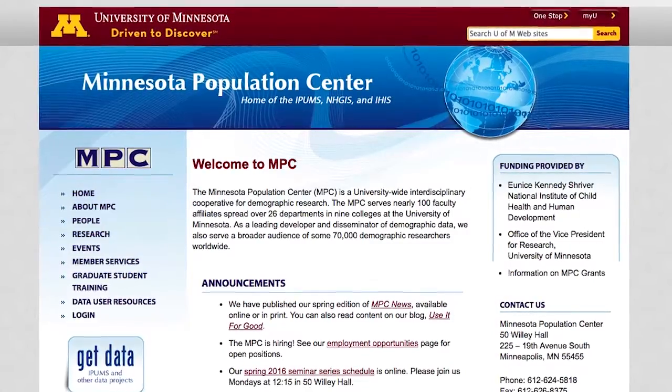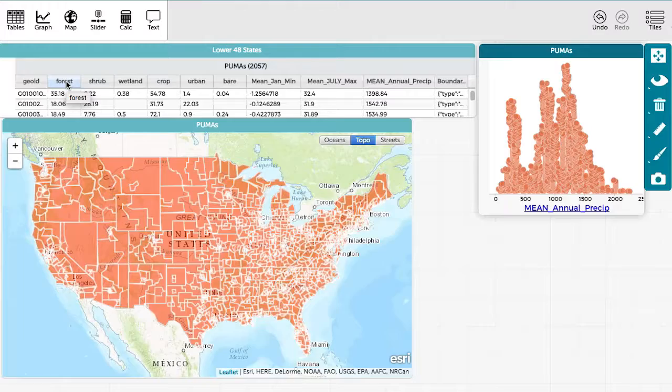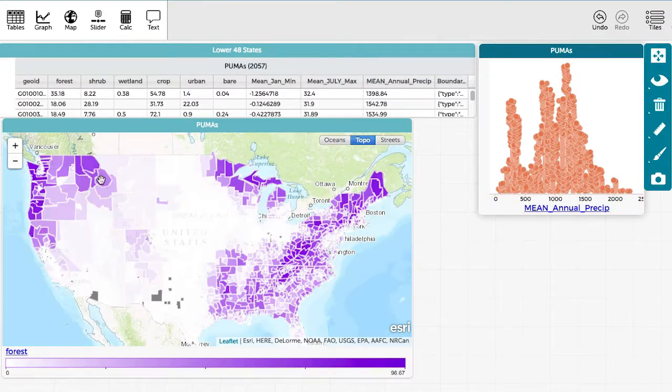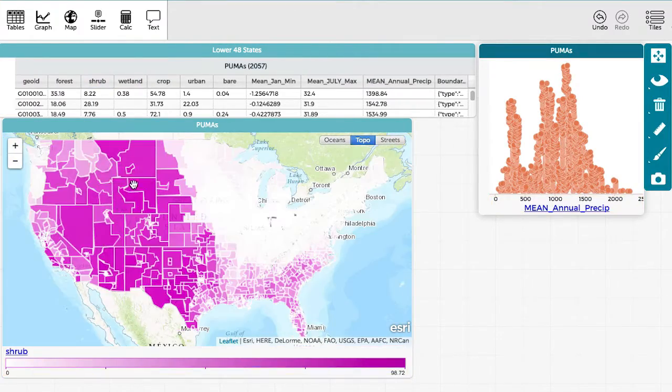We're working with several partners to expand the way CODAP can work with various forms of data. One of our partners is the Minnesota Population Center and they have very interesting data that's oriented to geographic areas.